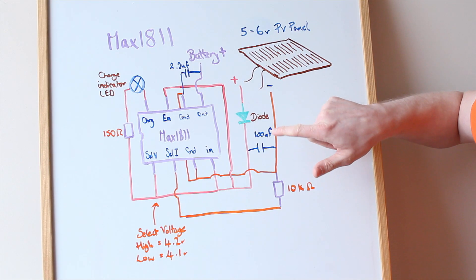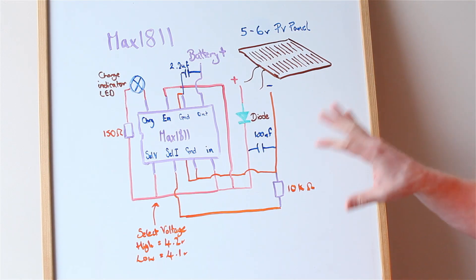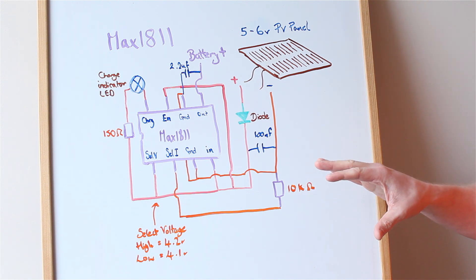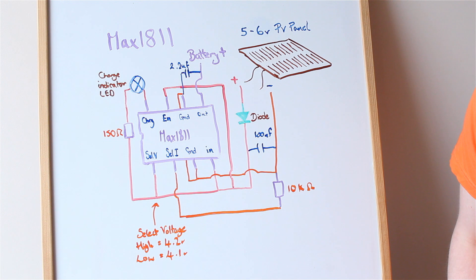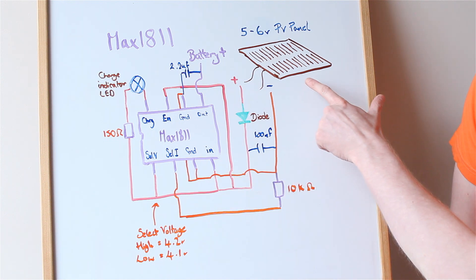Right, so here's the circuit that I'm using for the MAX 1811. It's roughly similar to what's in the datasheet, it's just a different format so I'm selecting different options than the datasheet gives you the example circuit for. So, you've got the solar panel up here, I'm using two but I've only drawn one.